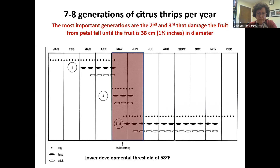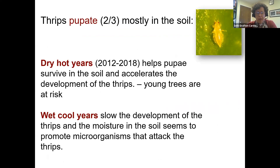Thrips pupate primarily in the soil. During dry, hot years the pupae seem to survive better, temperatures accelerate thrips development, and we see a lot more thrips pressure. In wet, cool years development slows down, and moisture in the soil seems to promote microorganisms that attack the thrips, so they don't complete pupation as well and populations are generally lower. The past six to eight years we've had some pretty warm springs and pretty hefty citrus thrips pressure.